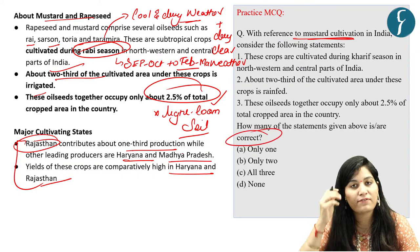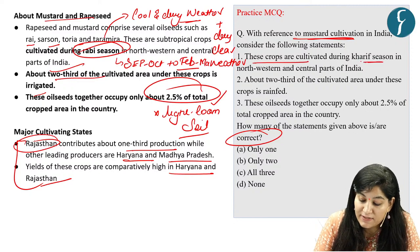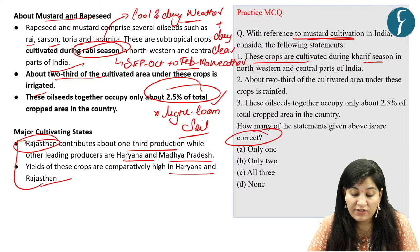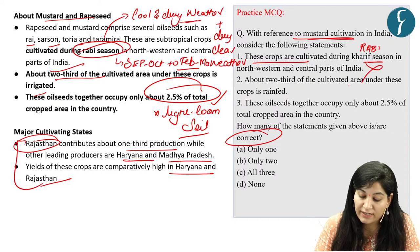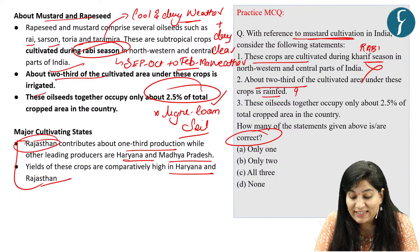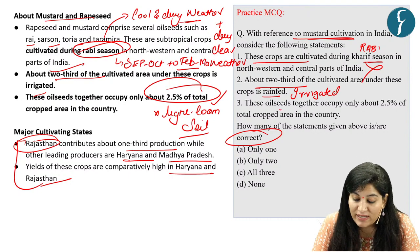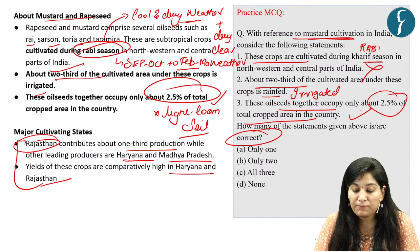Let's solve our practice question. Statement 1: These crops are cultivated during the kharif season in the northwestern and central part of India — incorrect. They require cool and dry weather, so they are cultivated during the rabi season, not kharif. Statement 2: About two-thirds of the cultivated area under these crops is rain-fed — incorrect. It is irrigated. Statement 3: These oilseeds together occupy only 2.5% of total cropped area — correct. So our answer is option A — only third statement is correct.